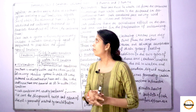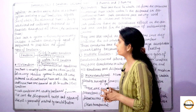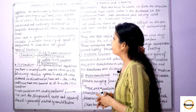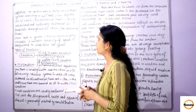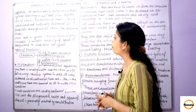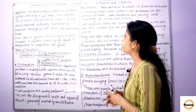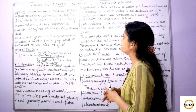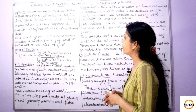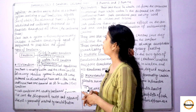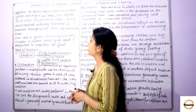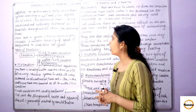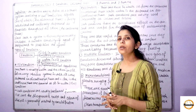An emulsion may be defined as a biphasic system consisting of two immiscible liquids, one of which — the dispersed phase — is finely subdivided and uniformly dispersed as droplets throughout the other, the continuous phase.